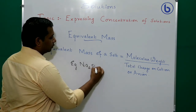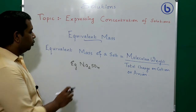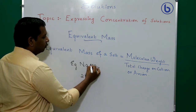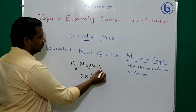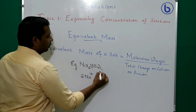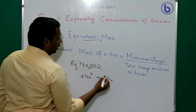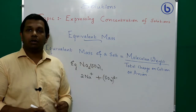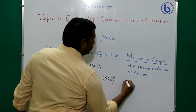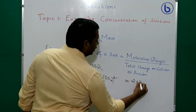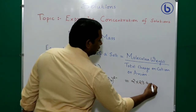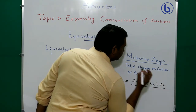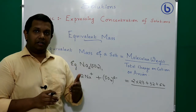Example: Na₂SO₄. It dissociates as 2 Na⁺ and SO₄²⁻. The molecular weight of Na₂SO₄ = (2 × 23) + 32 + (16 × 4) = 46 + 32 + 64 = 142.